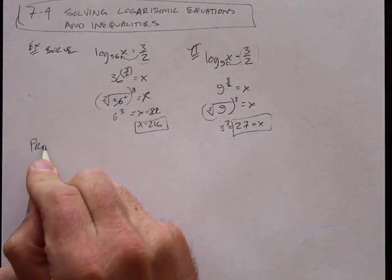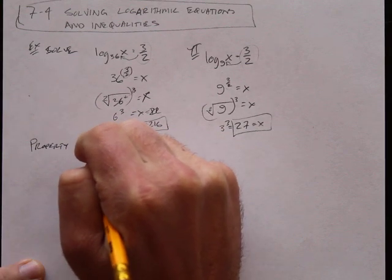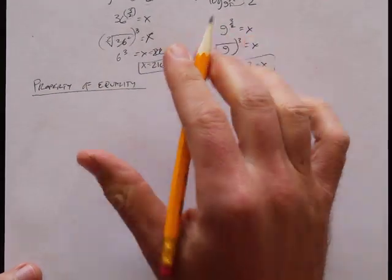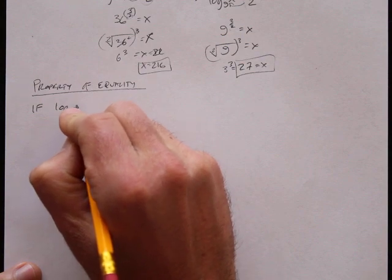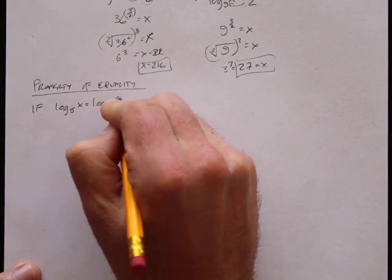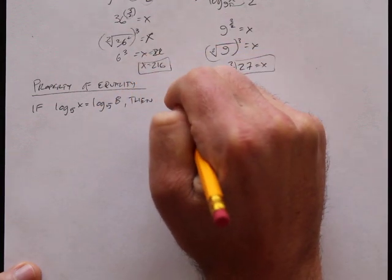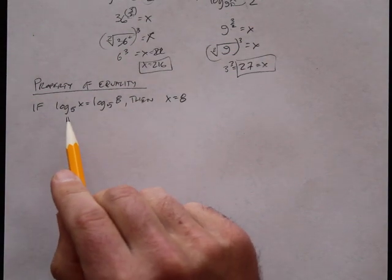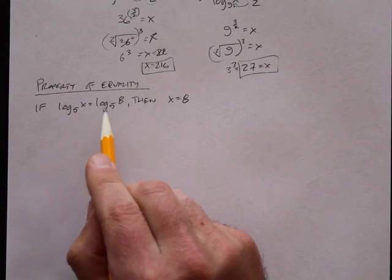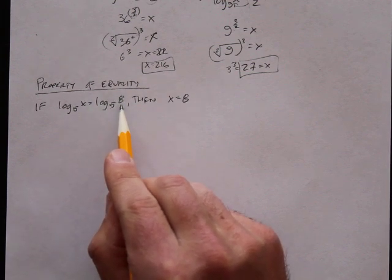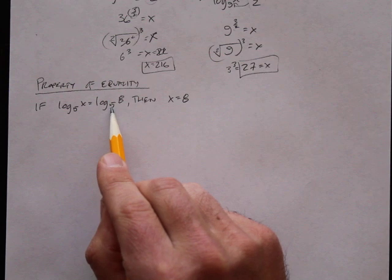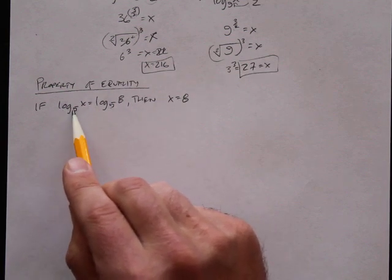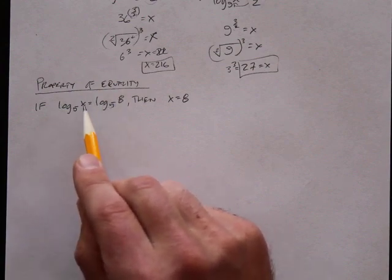Property of equality: if log base 5 of x equals log base 5 of 8, then x equals 8. Just like when we're using exponential expressions, if the base is the same, we can ignore the base and just look at what's inside. If it's log base 5 of x equals log base 5 of 8, we can ignore the log base 5 and just say x equals 8.